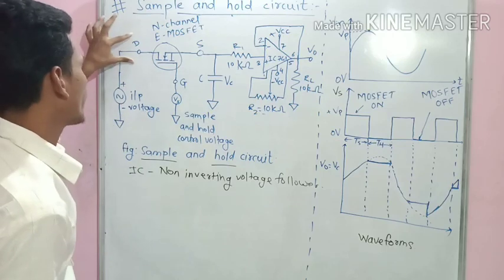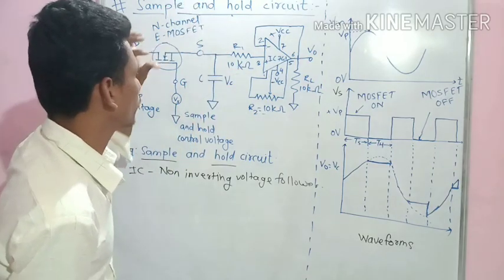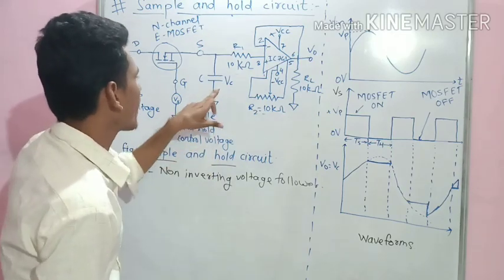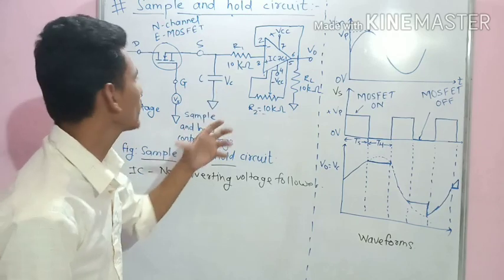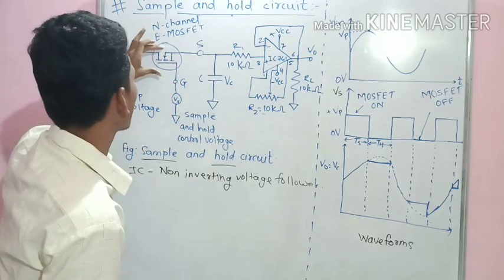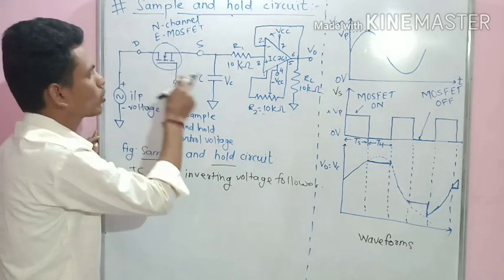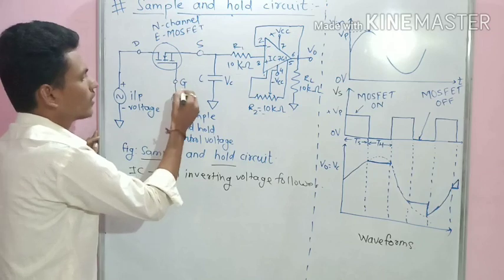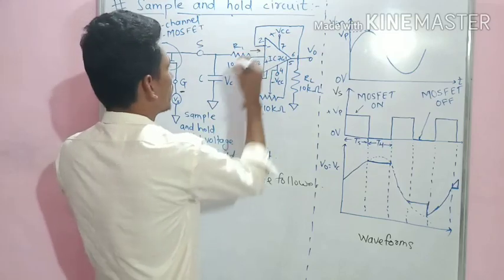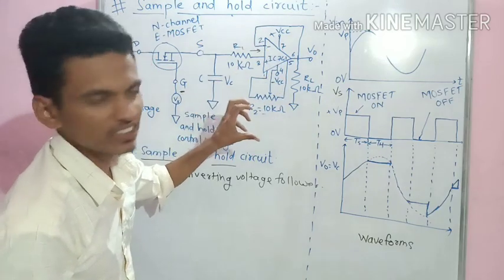When the gate voltage goes to zero, the switch is open. The capacitor cannot discharge through the source side, so it must hold its charge. It can only discharge through the op-amp side, but the non-inverting amplifier has very high input impedance.